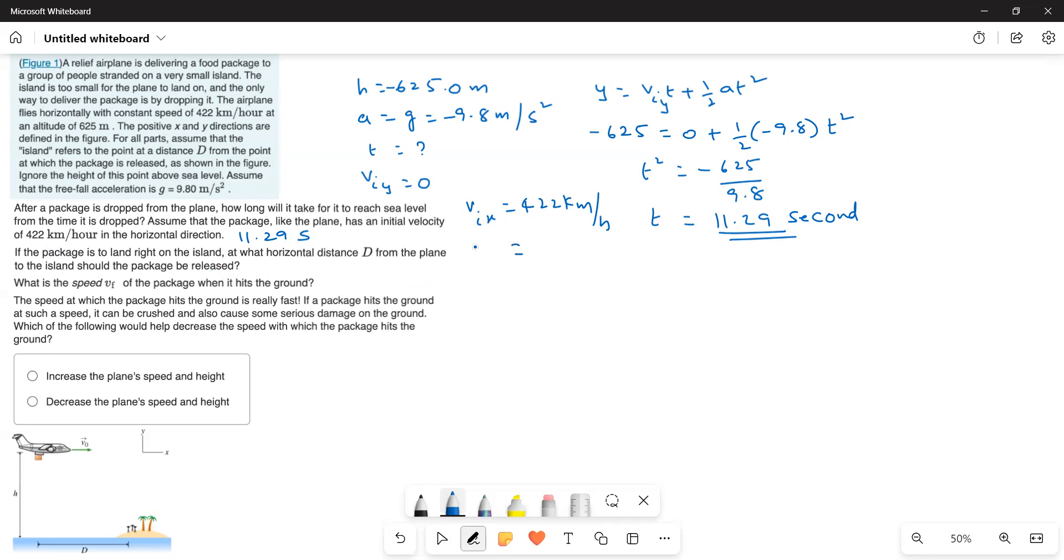So, I convert it into meters per second. So, v_x is equal to 117.22 meters per second. And we know distance is equal to d is equal to v t. Therefore, this is equal to distance is equal to 117.22 meters per second times 11.29 seconds. That gives the value of 1323.43 meters.